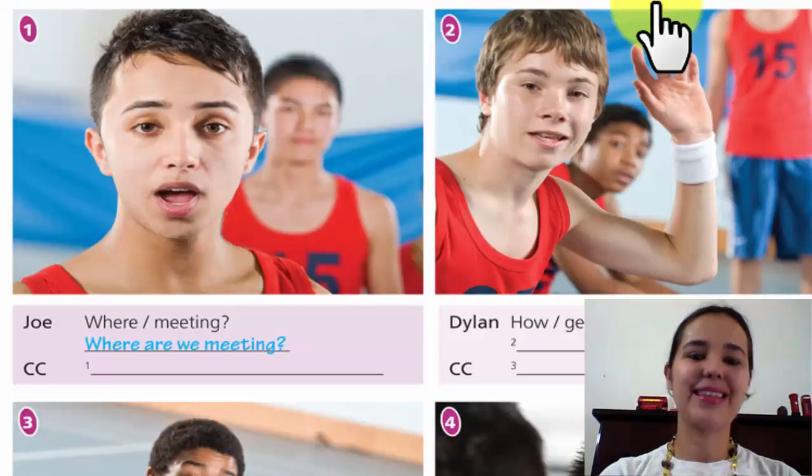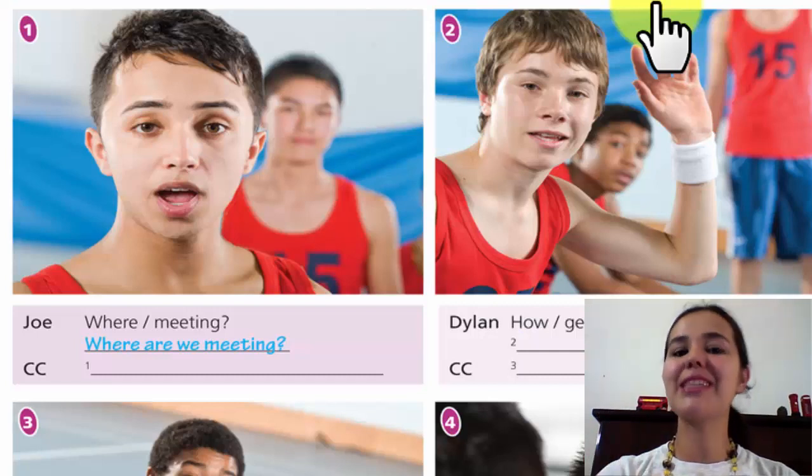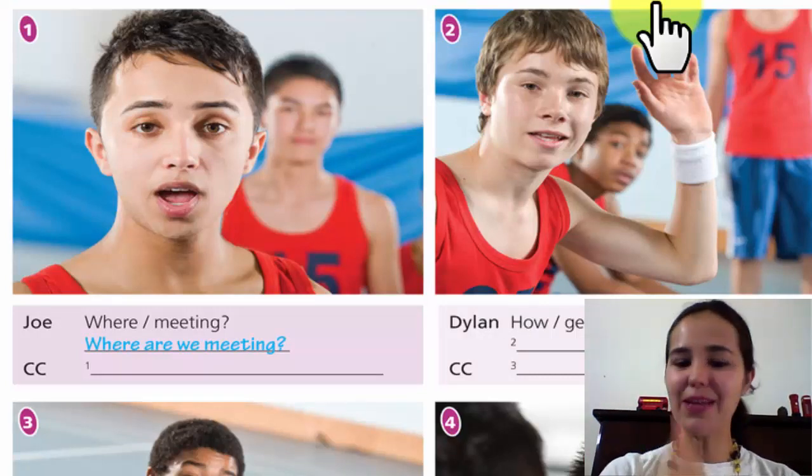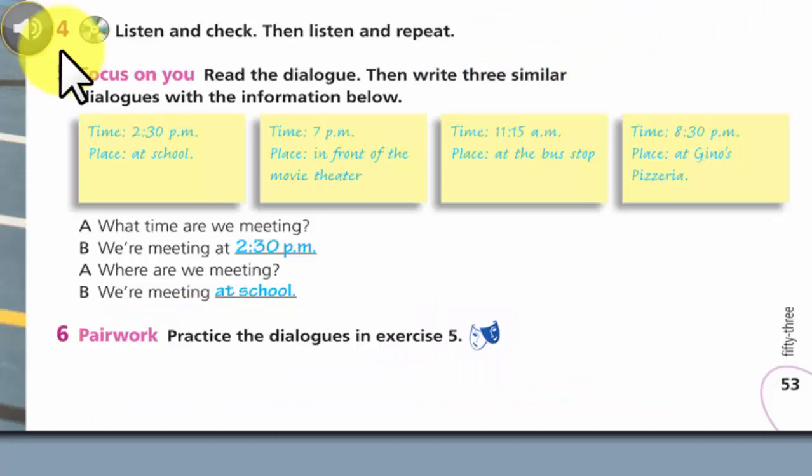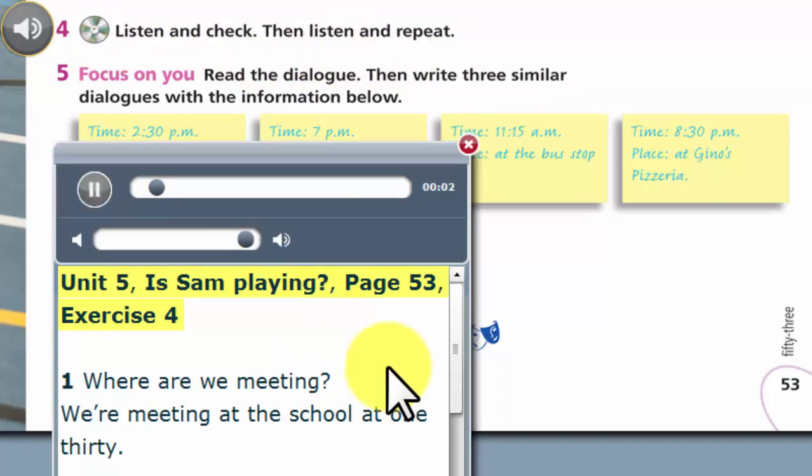Do you have any questions? If you don't understand the exercise, please send me a message. Okay? This is exercise 4. Listen and check. Then listen and repeat. Unit 5. Is Sam playing? Page 53. Exercise 4.